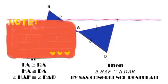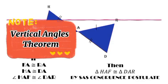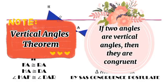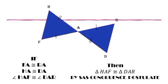Based on our theorem, vertical angles theorem, if two angles are vertical angles, then they are congruent. Therefore, angle HAF is congruent to angle DAR. Therefore, triangle HAF is congruent to triangle DAR by SAS congruence postulate.